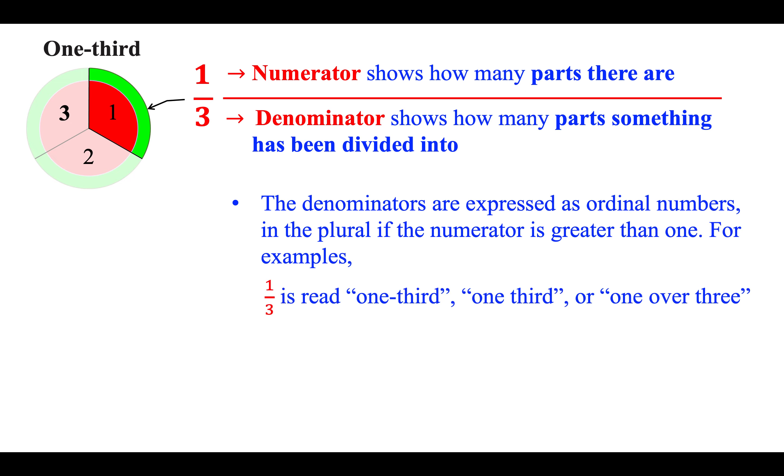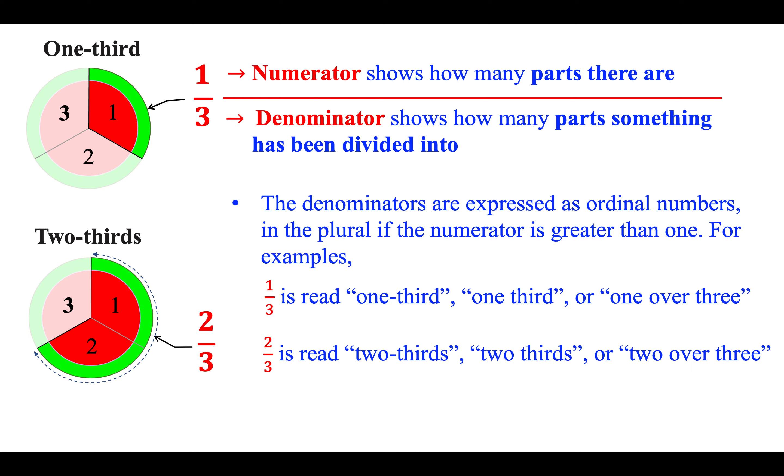The denominators are expressed as ordinal numbers in the plural if the numerator is greater than 1. For examples, 1 slash 3 is read 1 third or 1 over 3. 2 slash 3 is read 2 thirds or 2 over 3.